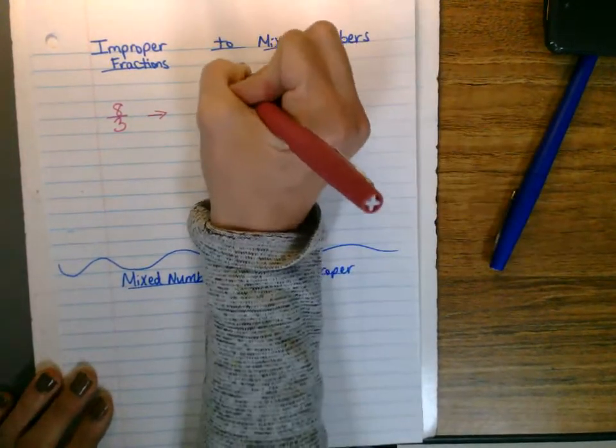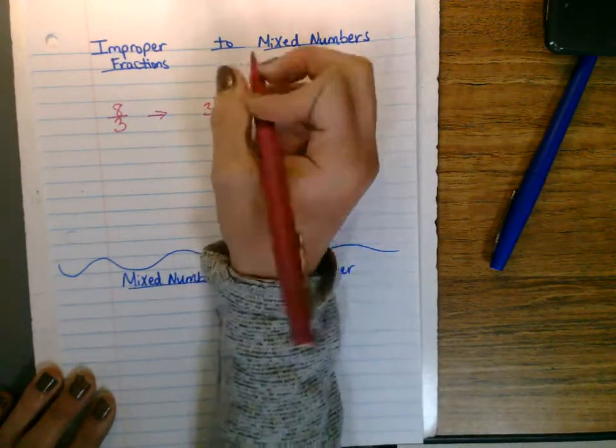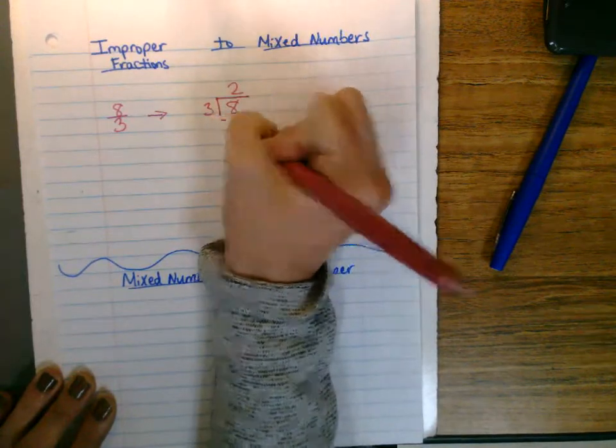Well, two, because I know three times two is six, and we subtract, and we say eight minus six is two.